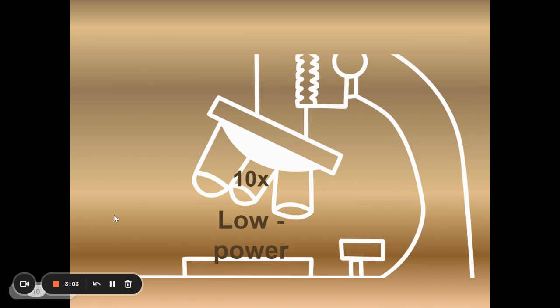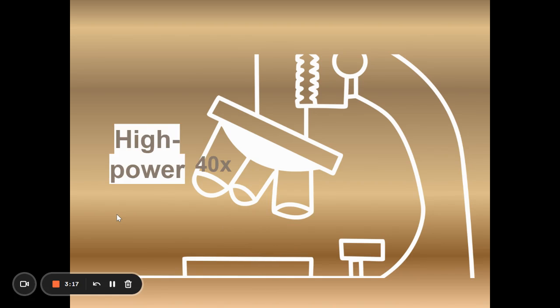Next we have the middle lens. The middle size and some people refer to this as middle or medium power. But for us we call this the low power. And this is the one that most of us will start with is the low power. And then the largest size objective is the highest power which is called the high power objective. And ours has a magnification of 40x.